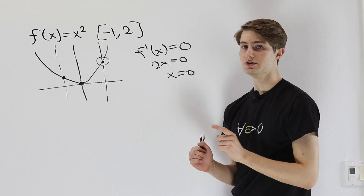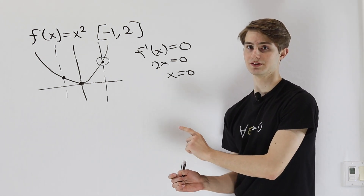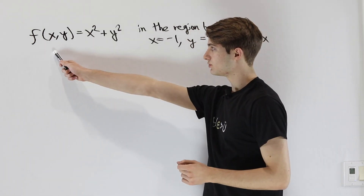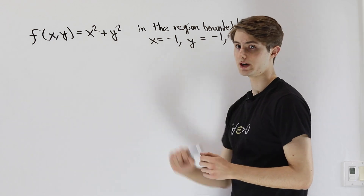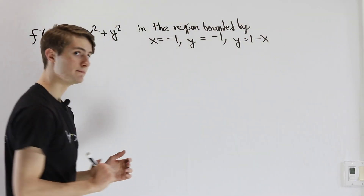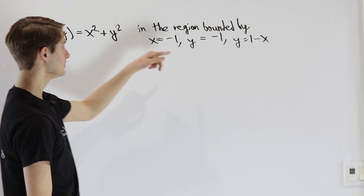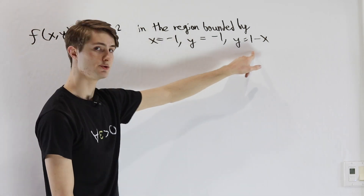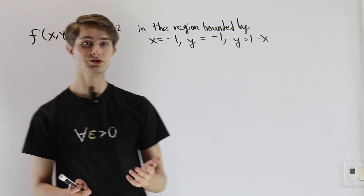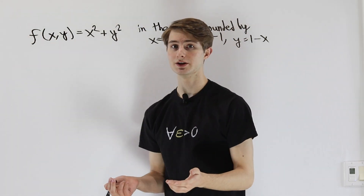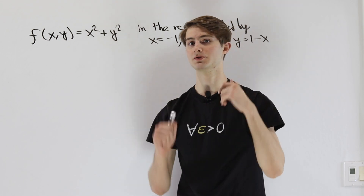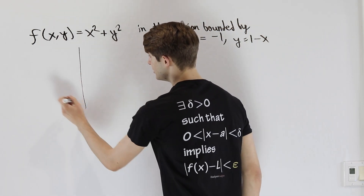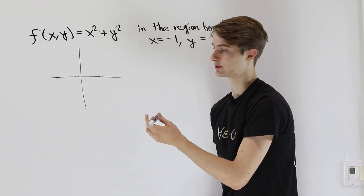Now we're going to take a look at the multivariable version of this situation. We're looking at a multivariable function f of x, y equals x squared plus y squared, and we're looking at the maximum and minimum values within the region bounded by x equals negative 1, y equals negative 1, and y equals 1 minus x. Just like before with that parabola, we need to figure out the 2D region we're working with.